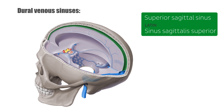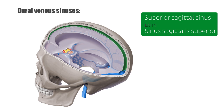The superior sagittal sinus, shown in green, runs along the upper fixed margin of the Falx cerebri, where the two cerebral hemispheres are separated at the midline. It drains to the confluence of sinuses, shown here.